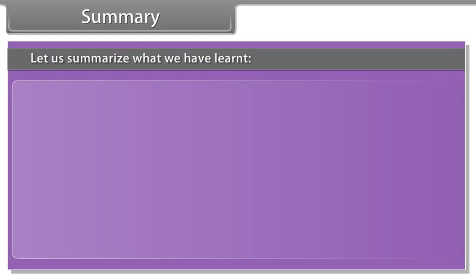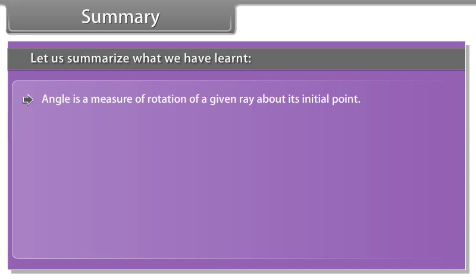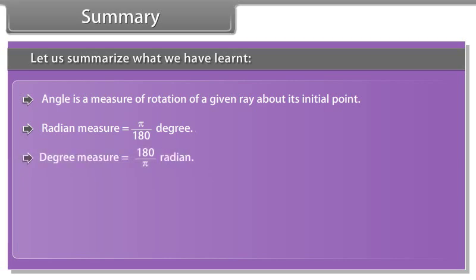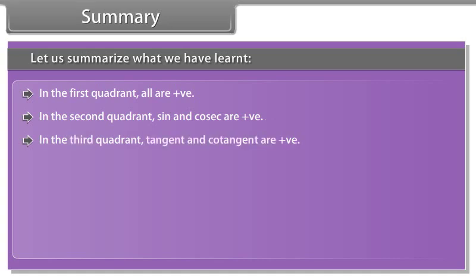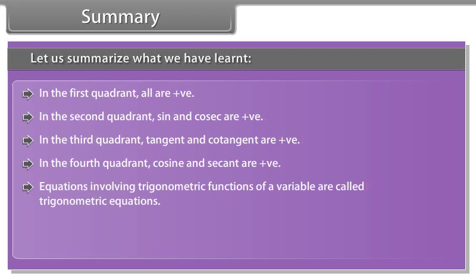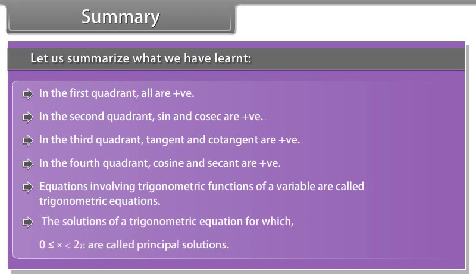Summary: Angle is a measure of rotation of a given ray about its initial point. Radian measure = (π/180) × degree measure; degree measure = (180/π) × radian measure. sin²θ + cos²θ = 1; sec²θ = 1 + tan²θ; cosec²θ = 1 + cot²θ. In quadrant 1, all are positive; in quadrant 2, sine and cosec are positive; in quadrant 3, tangent and cotangent are positive; in quadrant 4, cosine and secant are positive. Equations involving trigonometric functions are called trigonometric equations; solutions for 0 ≤ x < 2π are called principal solutions.